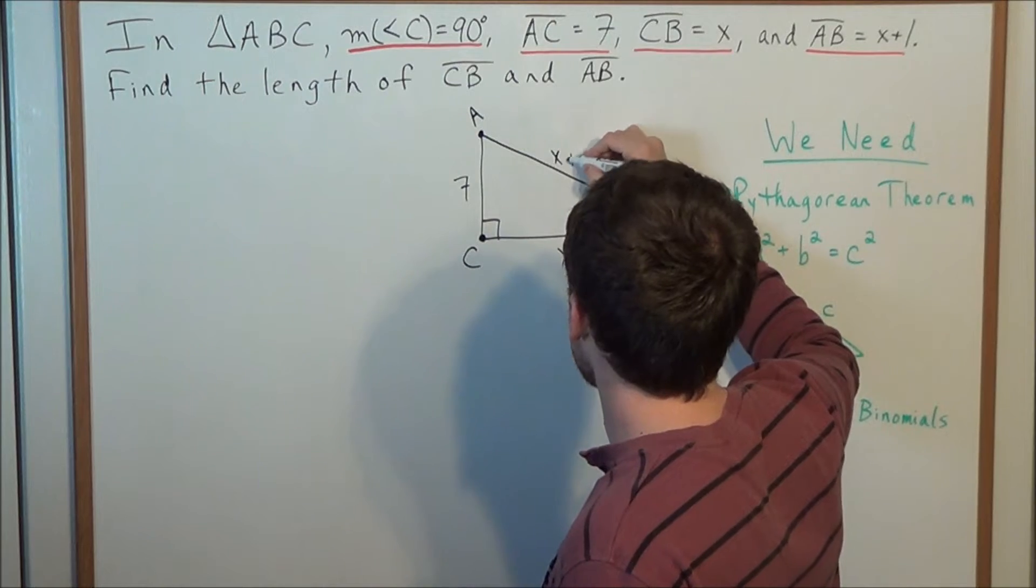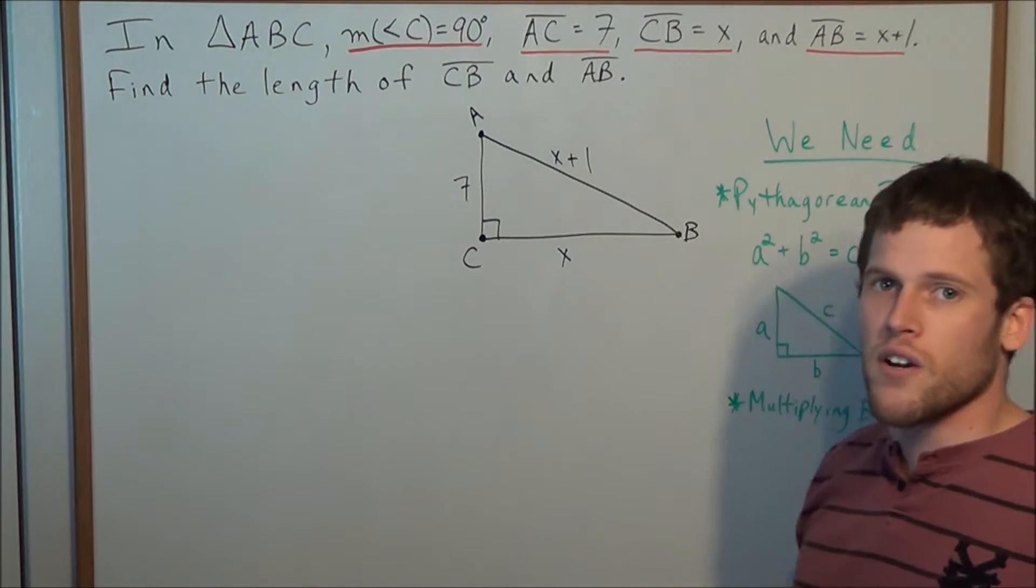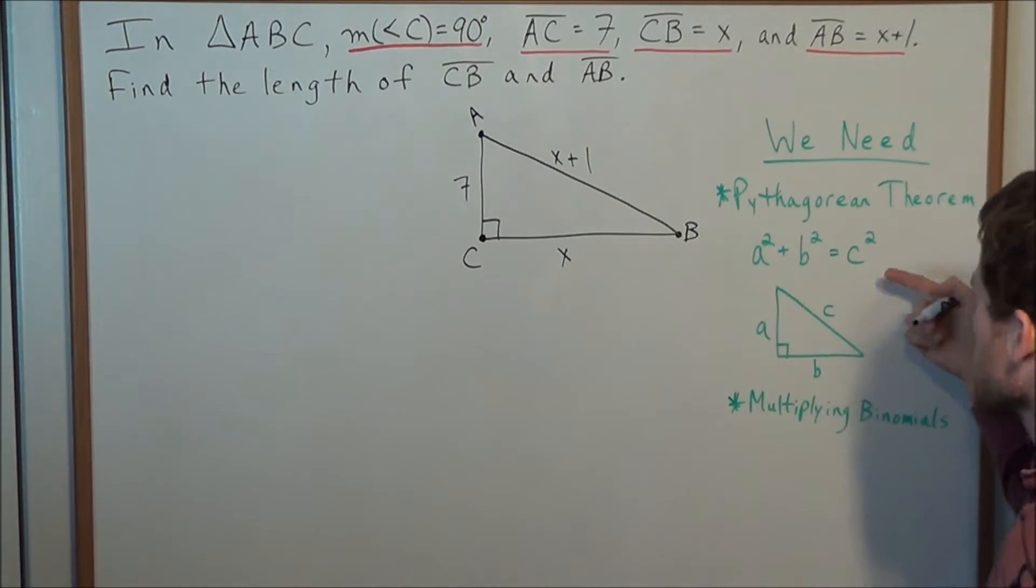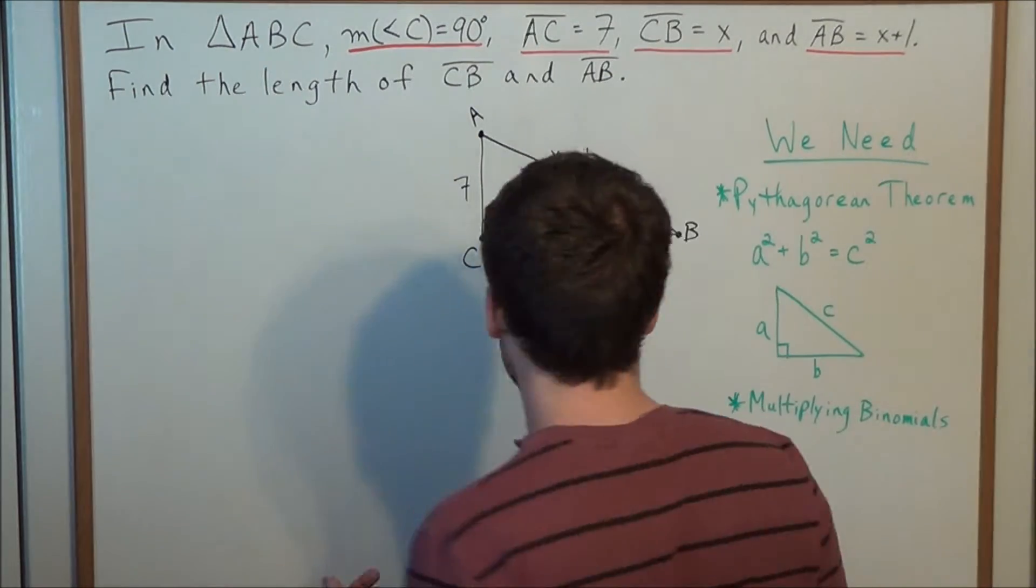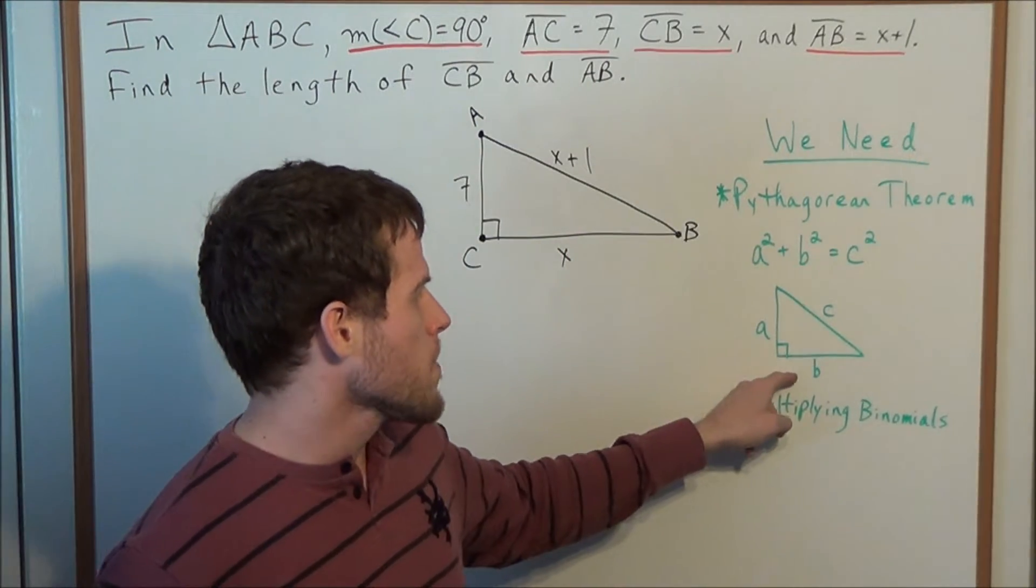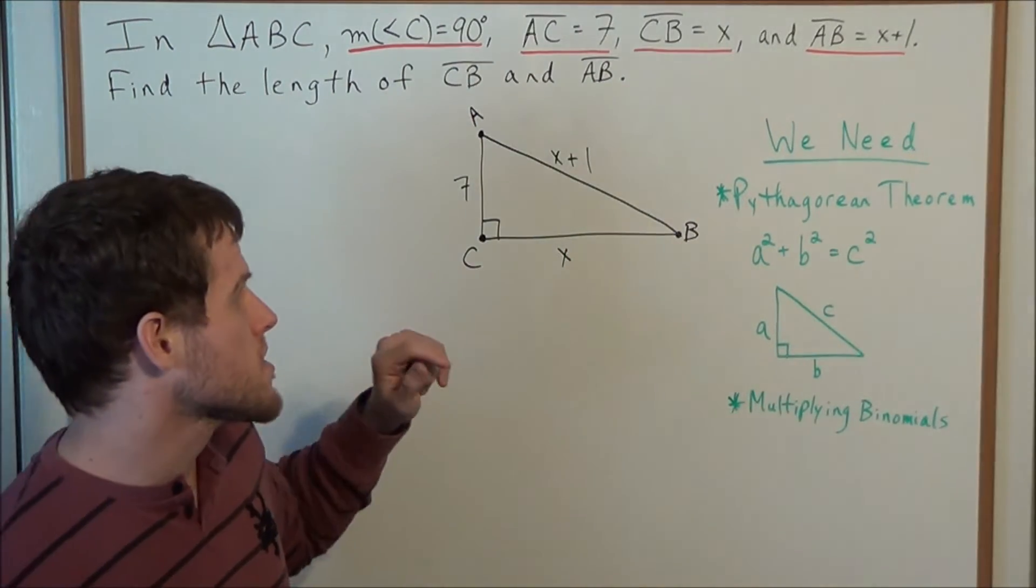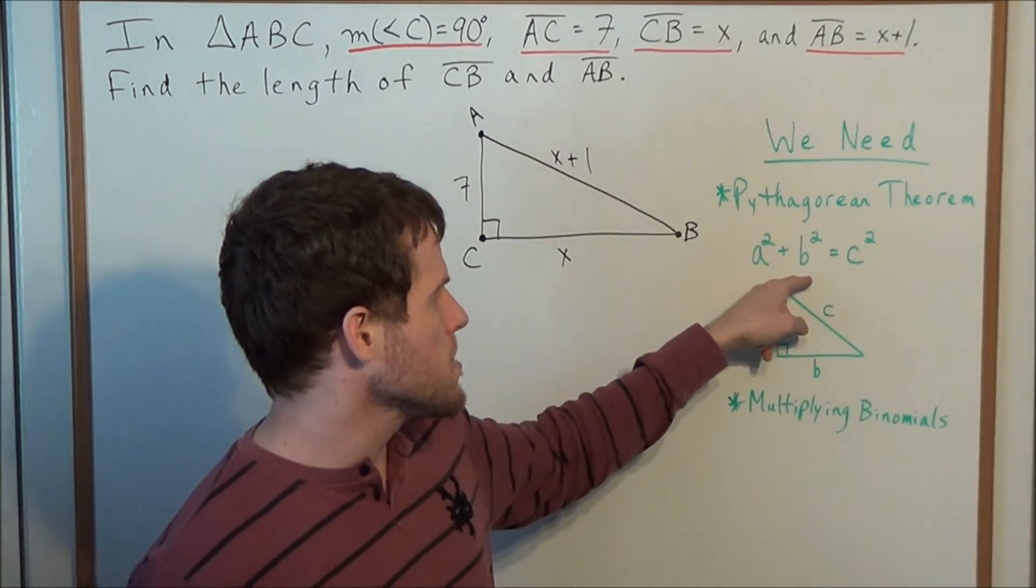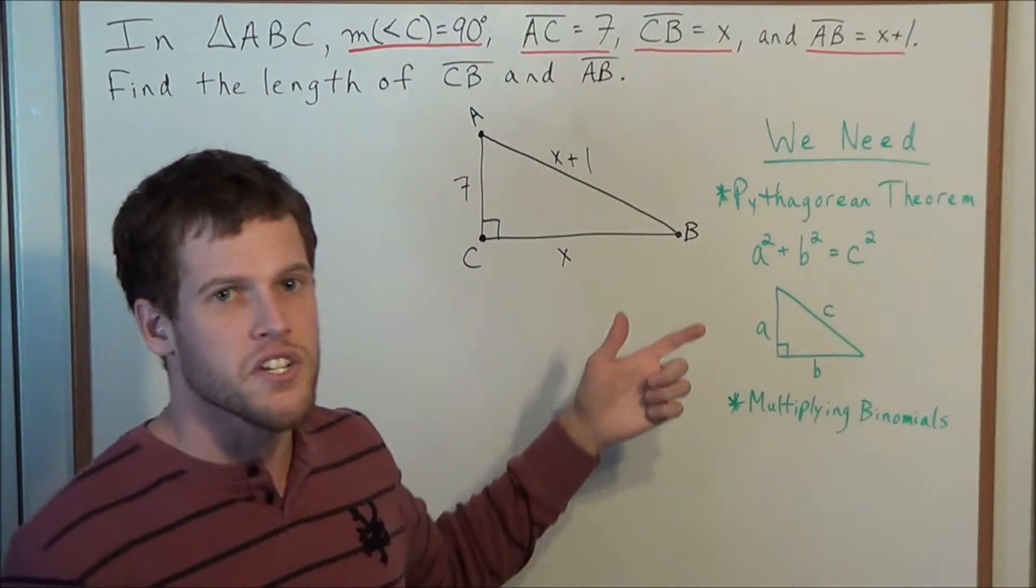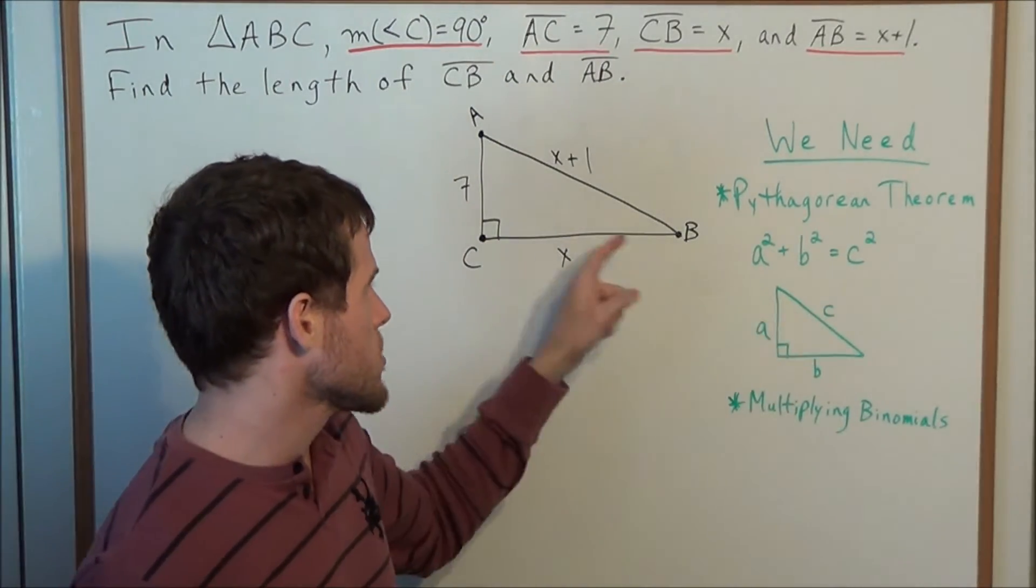But these are variables X, so we need to find the actual length of side CB and AB. So we're going to use the Pythagorean theorem, which when we have any right triangle with side lengths A, B and hypotenuse C, we can set up the equation A squared plus B squared equals C squared. These three side lengths must fit this relationship in order for this to be a right triangle.